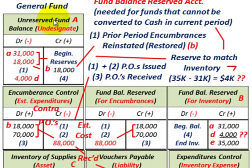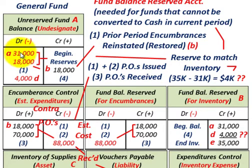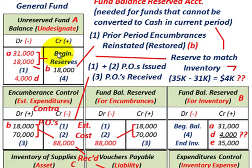Along with that fund balance reserved account, we're going to have an unreserved undesignated fund balance for the general fund. Since we had our fund balance reserve for those beginning inventories at $31,000 credit, our unreserved undesignated fund balance has to have a debit or reduction here. We debit or decrease our unreserved fund balance by $31,000 for the beginning inventory balances.